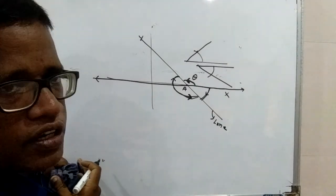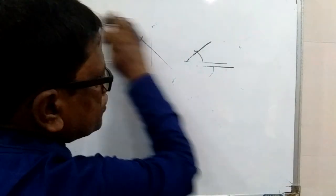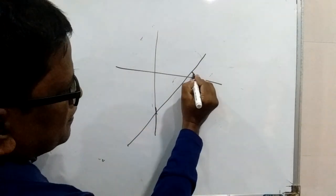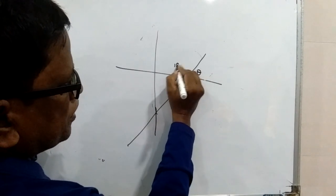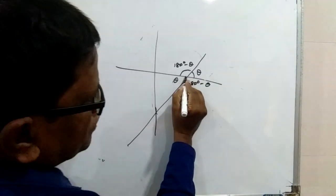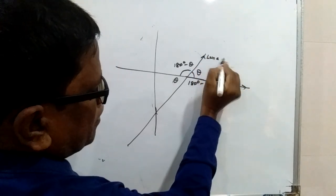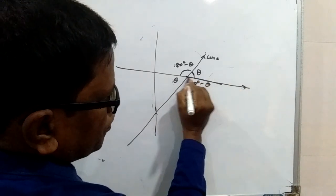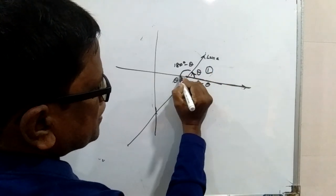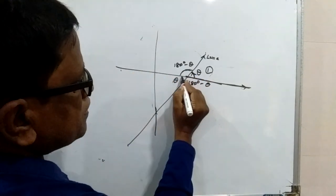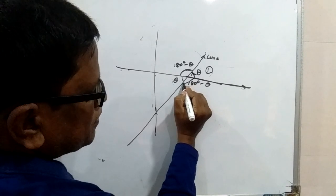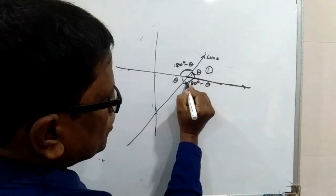If you consider another line going in the other direction, this angle is theta, this angle is 180 degrees minus theta, this angle amount is also theta, and this is 180 degrees minus theta. But if you consider — this is your positive direction, this is your line — this angle will be the inclination angle. The others cannot be the inclination angle since one is in the negative direction and another is positive direction but clockwise sense. So only the inclination angle is theta.